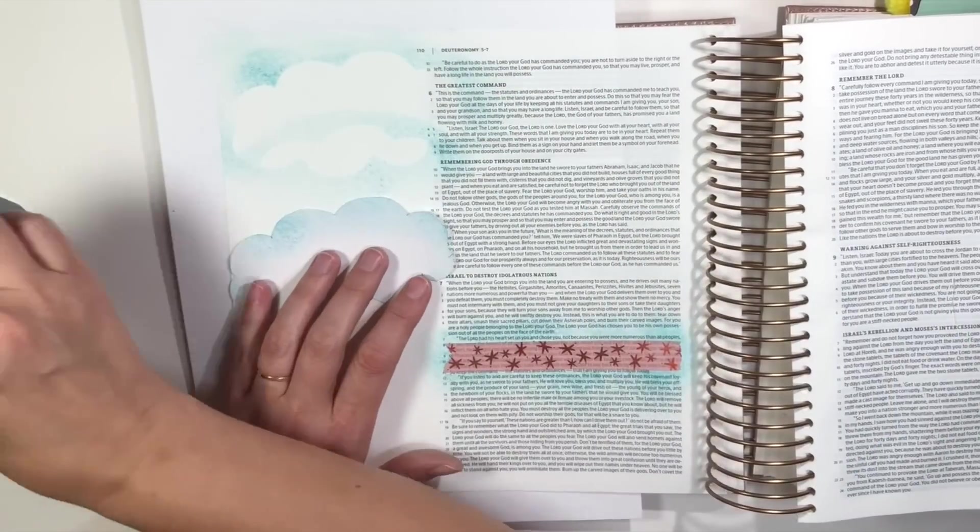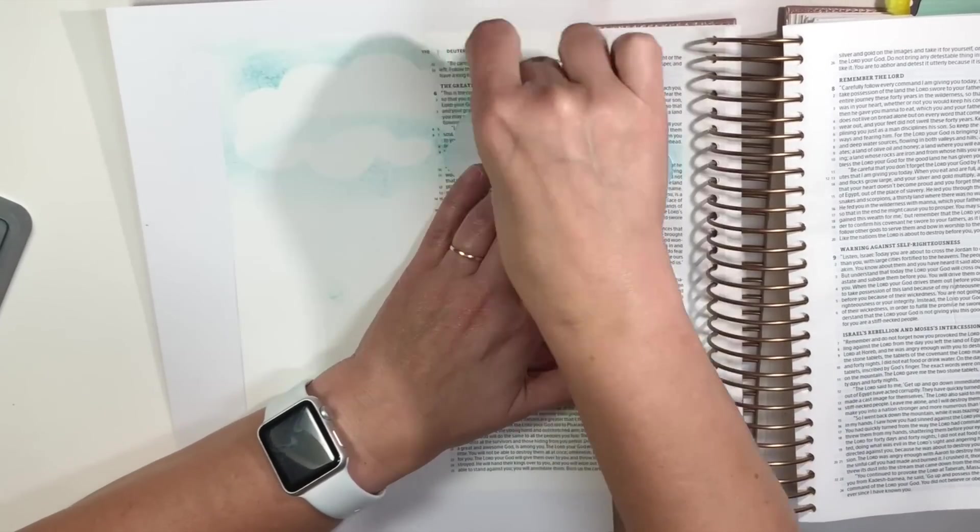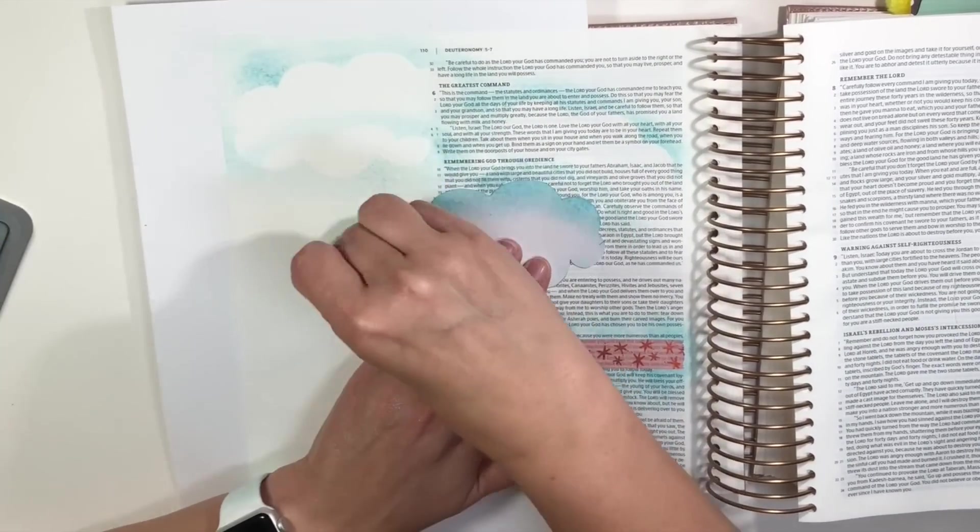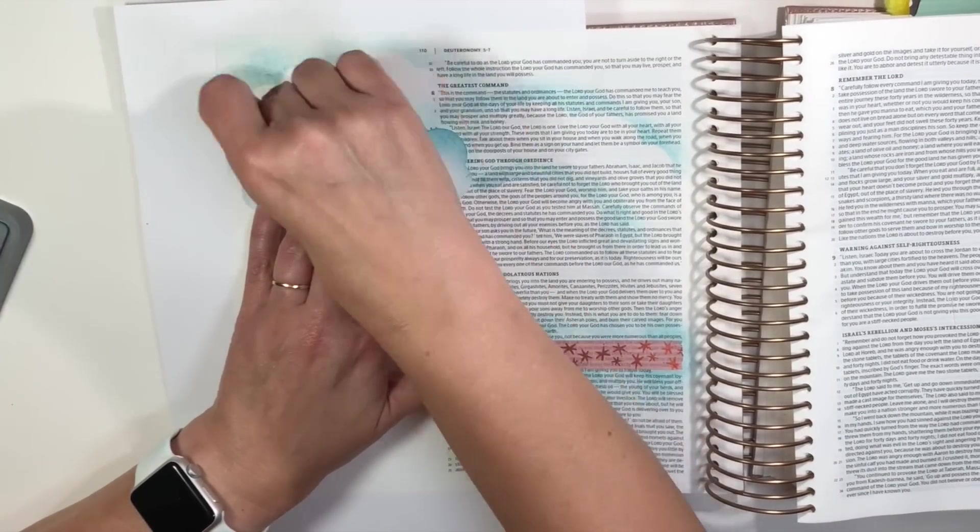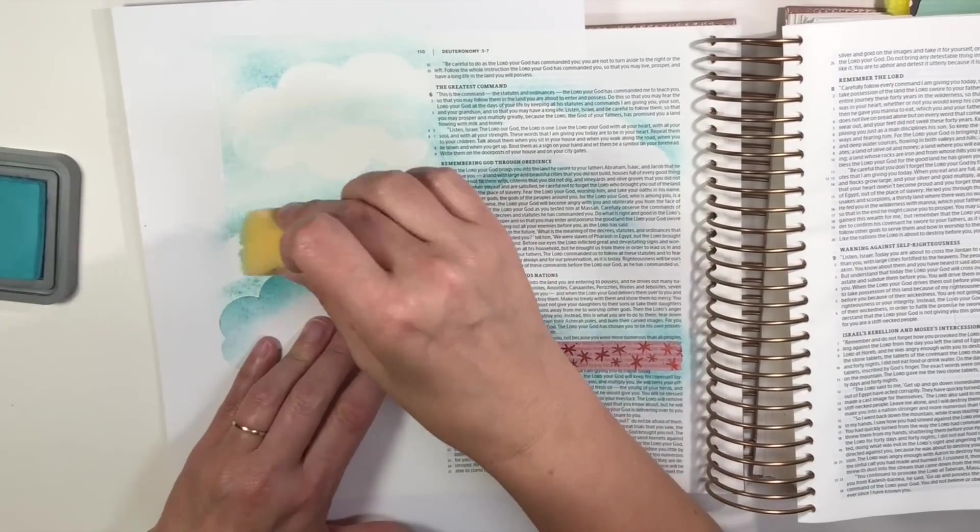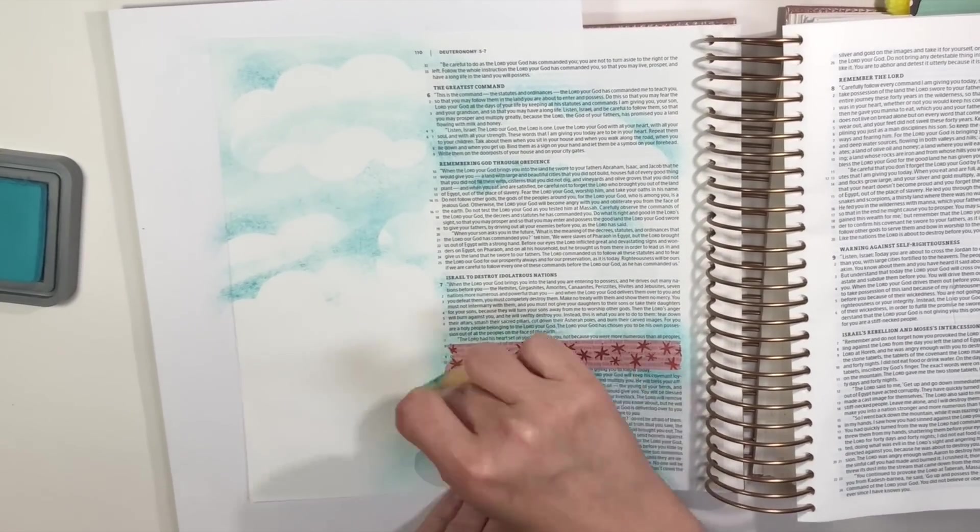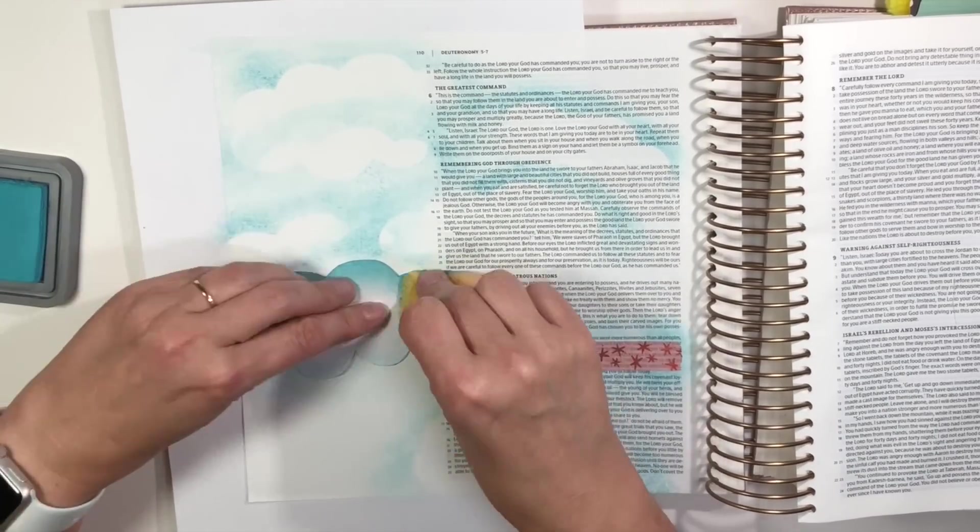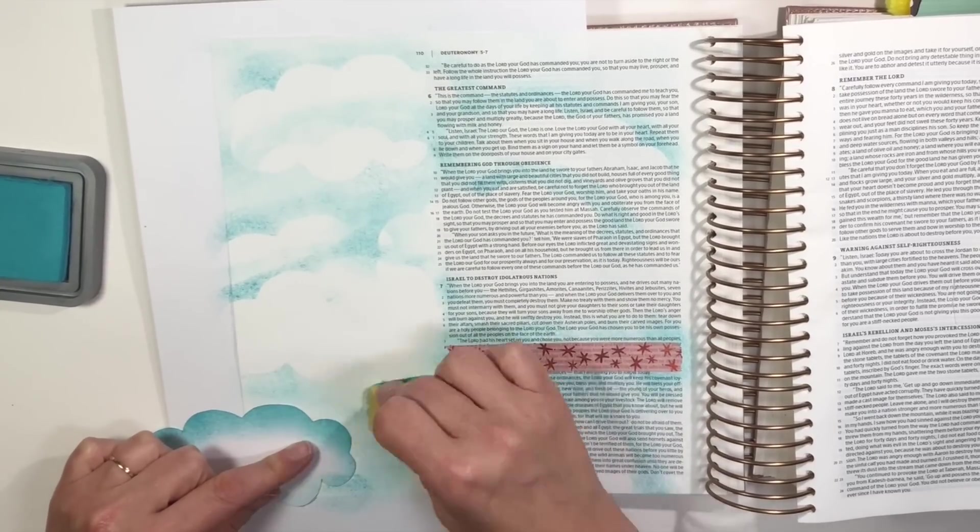So, I am taking this template and I'm moving it around and simply sponging around the edges. Now, I'm showing you if you sponge around the entire cloud, then you're going to get one effect. I actually like just going around the top edge. You can go around both the top and bottom, and I might do that towards the bottom of the page, but I really like just going around the top of it and moving that. That gives it more of a cloud-like look, but in some places, I will complete the whole cloud.